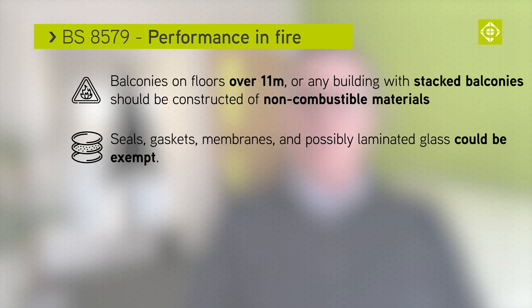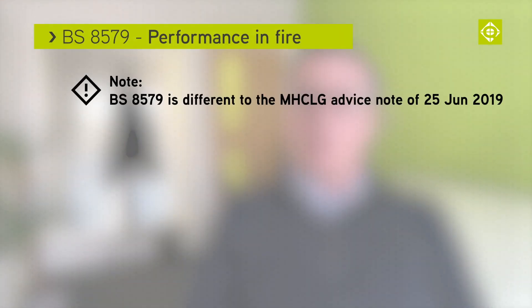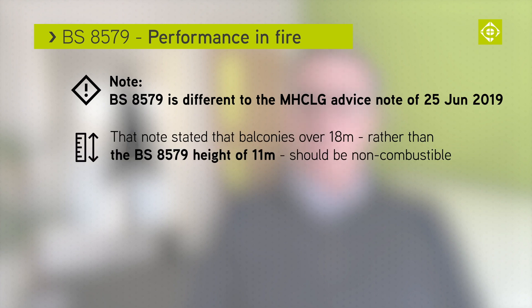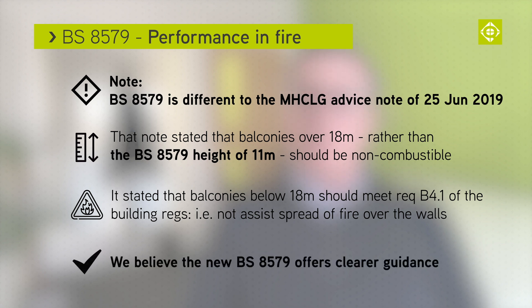Seals, gaskets, membranes, and possibly laminated glass could be exempt subject to a risk assessment. This is a little different to the advice note from the MHCLG of the 25th of June 2019, which states that balconies over 18 metres rather than 11 should be non-combustible, and that balconies below this level should be designed to meet requirement B4-1 of the building regulations — i.e., they should not assist spread of fire over the walls. It was difficult to know what this precisely meant with any great clarity, so I believe that this British standard offers a clearer possible interpretation.